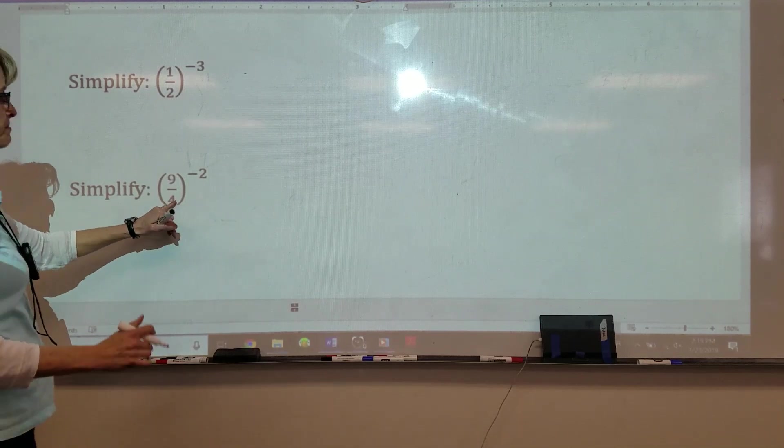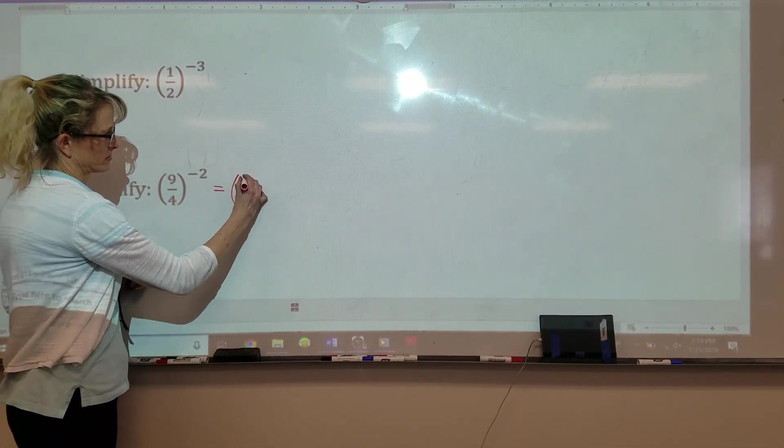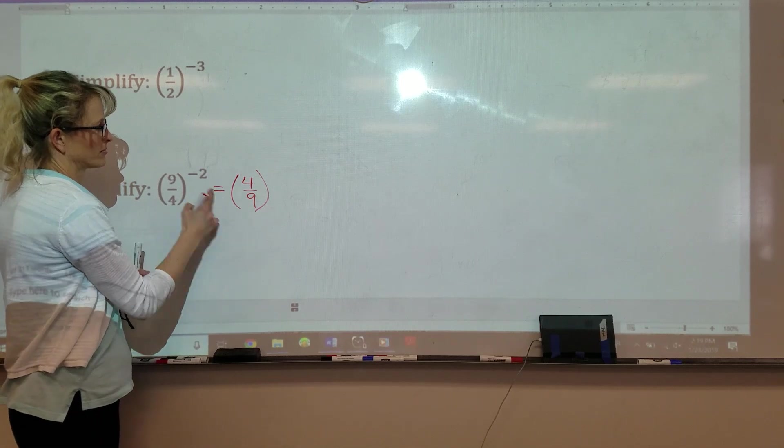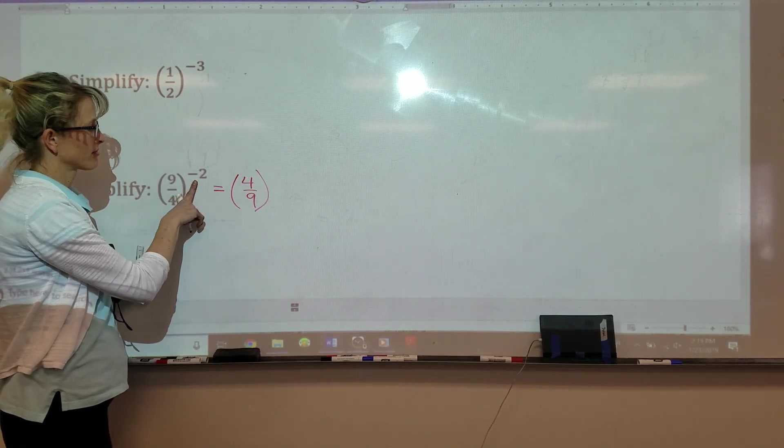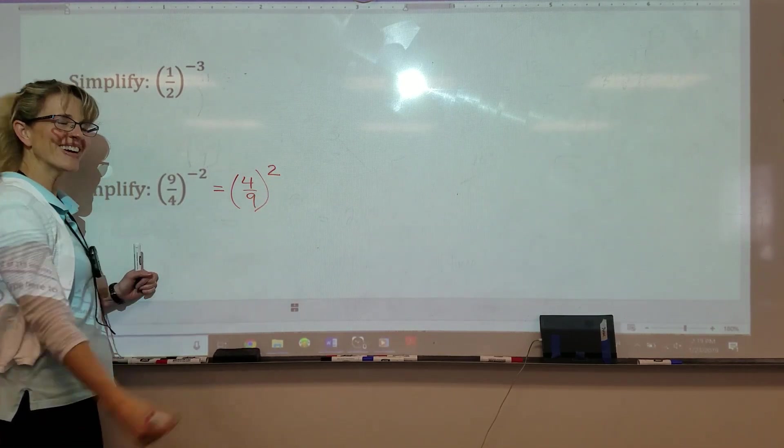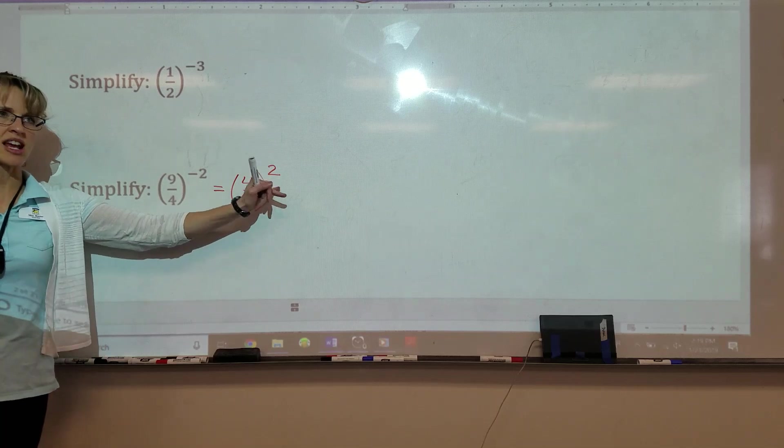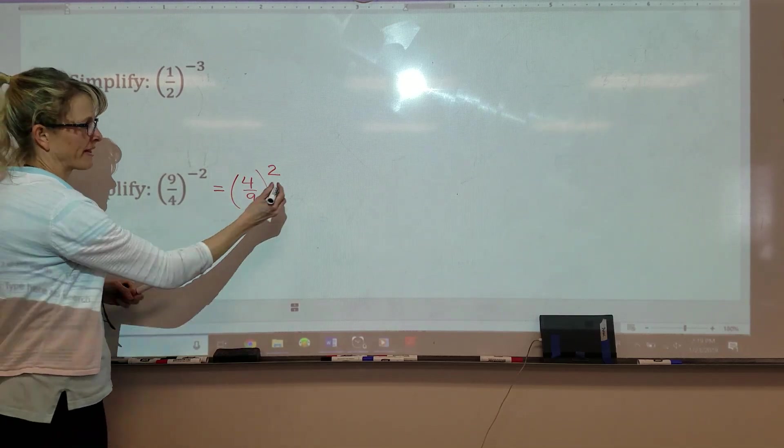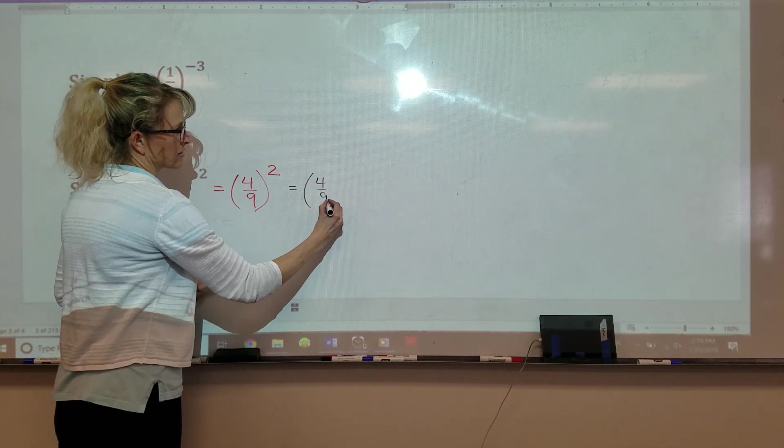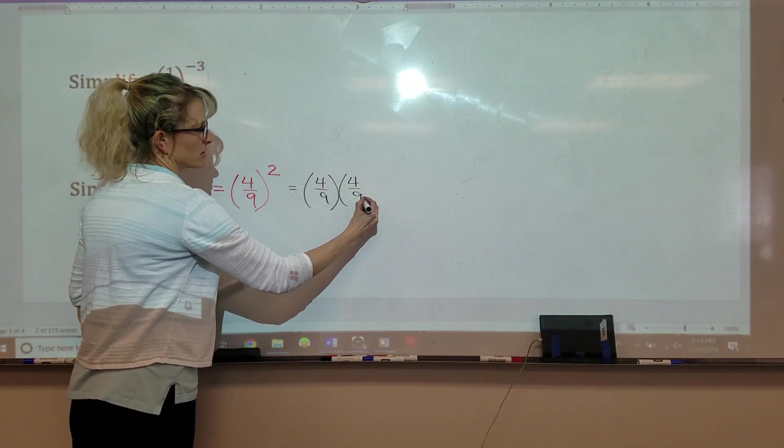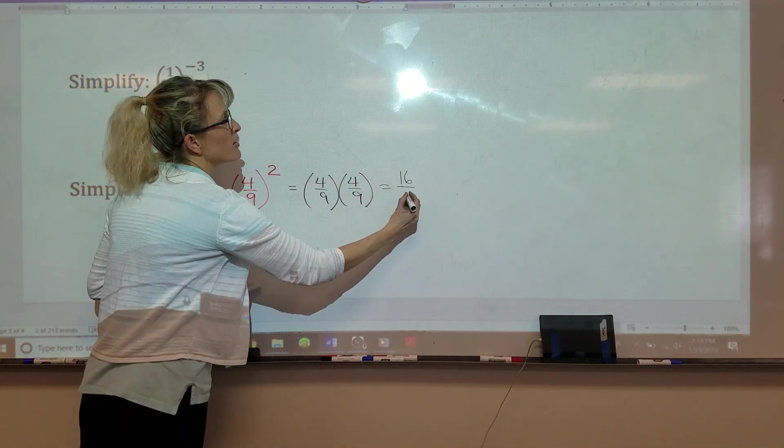Oh, well, you flip it upside down so it's four ninths, and then you change it to the second, not the negative. Very good. Take the reciprocal, change the sign. Then what? You would multiply four ninths by four ninths, which would give you 16 over 81.